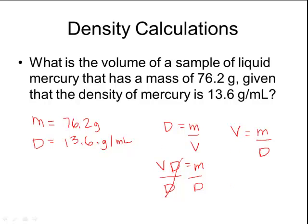So now I'll take the numbers that are over here on the left-hand side and plug them in on my problem. So mass, 76.2 grams divided by density, 13.6. And when I plug those in my calculator, you should get 5.60 milliliters as your final answer.